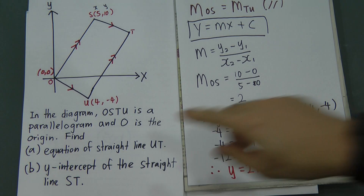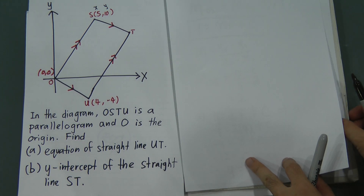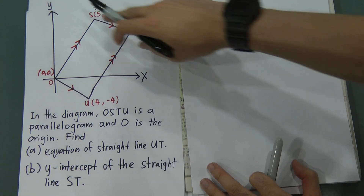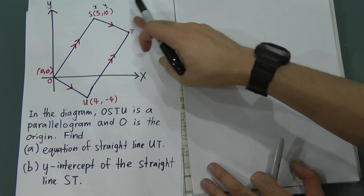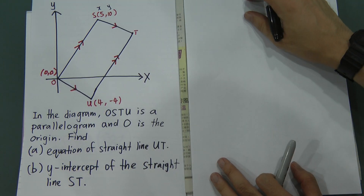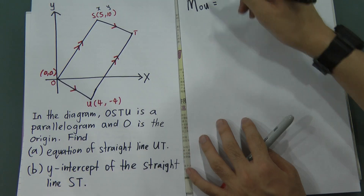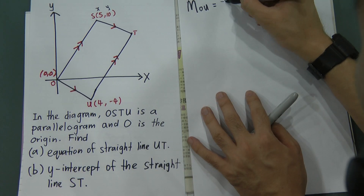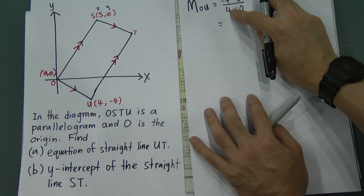That completes part A. For the second part, we need the Y-intercept of ST. In order to find the Y-intercept of ST, we need the gradient for ST. We do not know the T coordinate, so we use O-U to find the gradient for ST because they are parallel. Gradient of O-U equals negative 4 minus 0 divided by 4 minus 0, which is negative 4 divided by 4, giving negative 1.